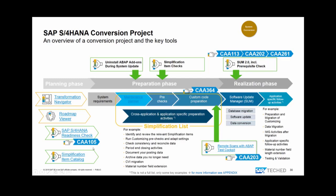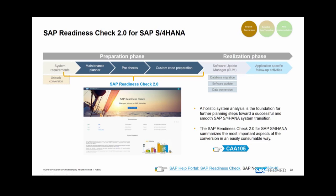The readiness check is a free SAP self-service tool that analyzes your current system situation regarding system requirements, HANA system sizing, installed software components (add-ons, switched-on business functions), simplification items that affect you, the effort for custom code adoption, and some quality aspects of your business processes. You run it by installing several SAP Notes in your system. The documentation on the Help Portal explains how to install and run the check.